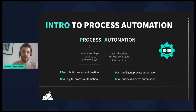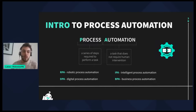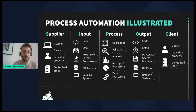Speaking of process automation in general, you can come across some other terms and abbreviations. For example, RPA, which stands for Robotic Process Automation, describes an automated process that mimics human users. DPA, Digital Process Automation, is usually used to describe an automated process including API connections. IPA, Intelligent Process Automation, includes artificial intelligence or other advanced technology. And BPA, Business Process Automation, is usually used as an umbrella term for all of the above.